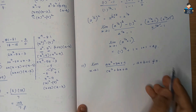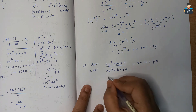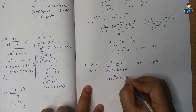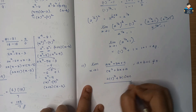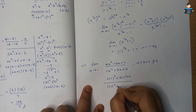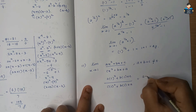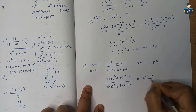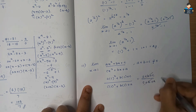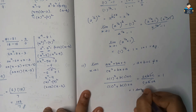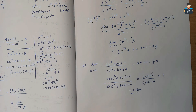Question 11: limit x tends to 1 of (ax² + bx + c) divided by (cx² + bx + a), where c is not equal to 0. Substituting x = 1: (a + b + c)/(c + b + a), which simplifies to 1.